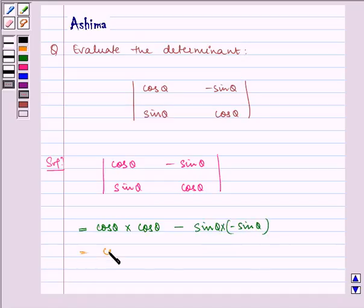Which equals cos squared theta plus sin squared theta, which equals 1.